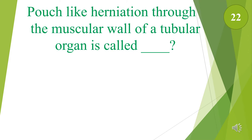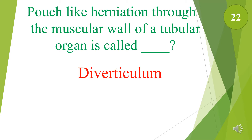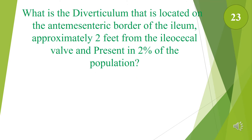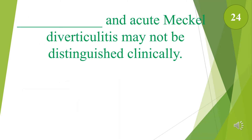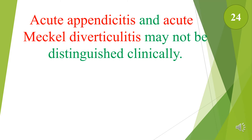Pouch-like herniation through the muscular wall of a tubular organ is called a diverticulum. What is the diverticulum located on the anti-mesenteric border of the ileum, approximately 2 feet from the ileocecal valve, present in 2% of the population? That is called Meckel's diverticulum. Acute appendicitis and acute Meckel's diverticulitis are usually misdiagnosed for one another.